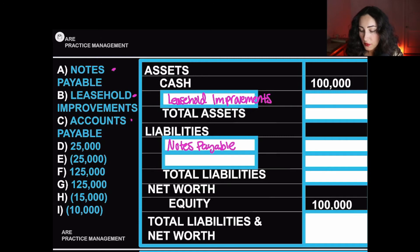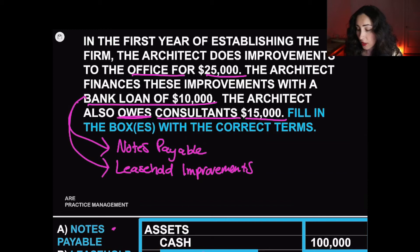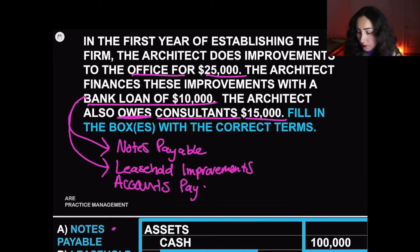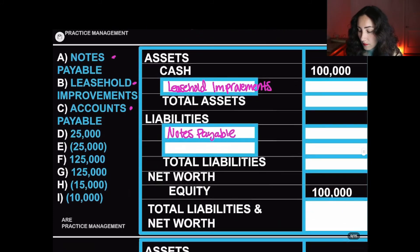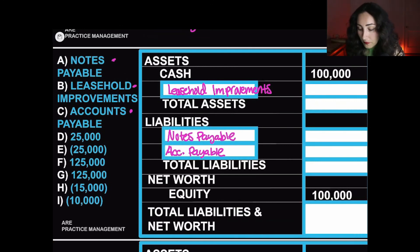Accounts payable is money that is owed. The architect owes consultants who worked on a project $15,000 in accounts payable. That will be a liability because you owe the consultants money — that goes under liabilities. Now we have all the boxes filled out on the left side. We need to put the dollar amounts correctly associated with the actual terms.